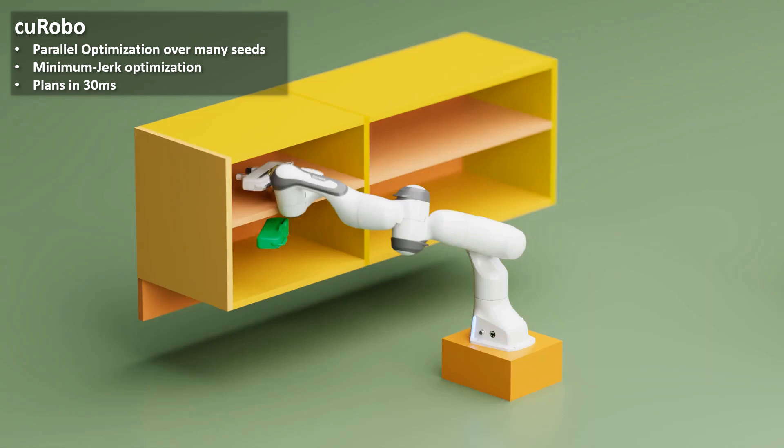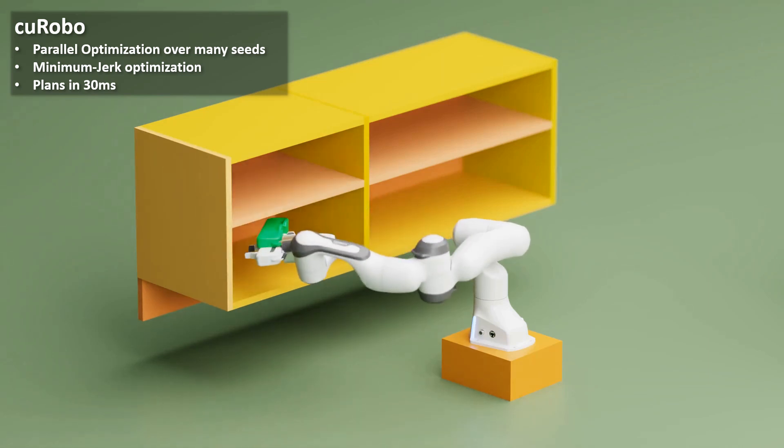Kurobo overcomes issues with trajectory optimization by implementing the full motion generation stack on the GPU. This enables running optimization over many parallel seeds to get the best trajectory. Kurobo can generate smooth, short trajectories within 30 milliseconds as shown here.